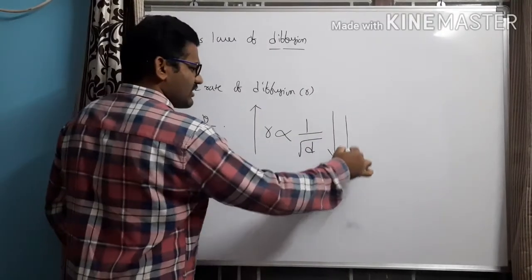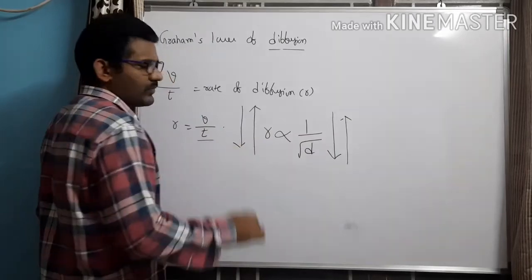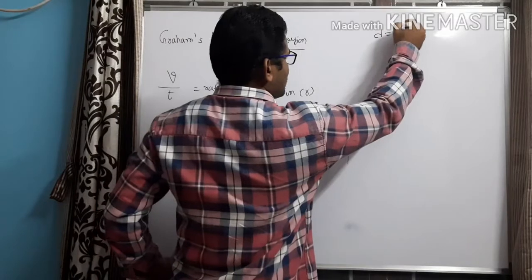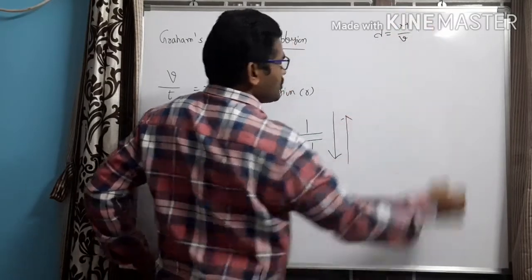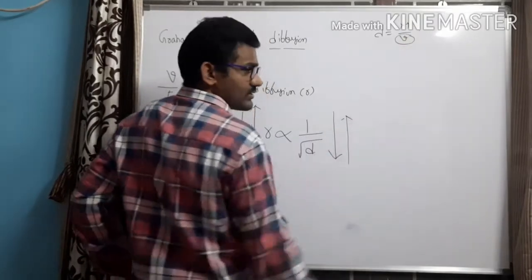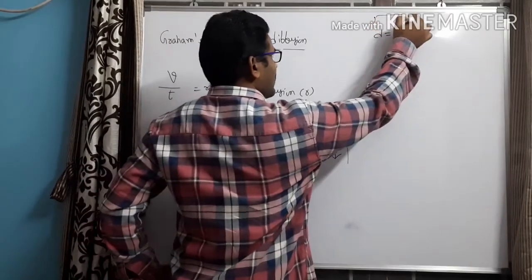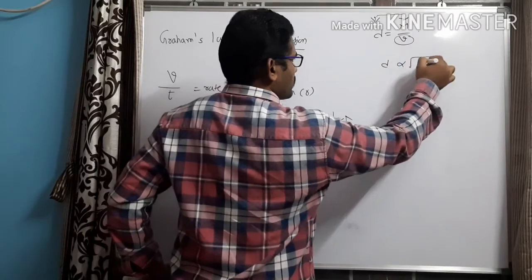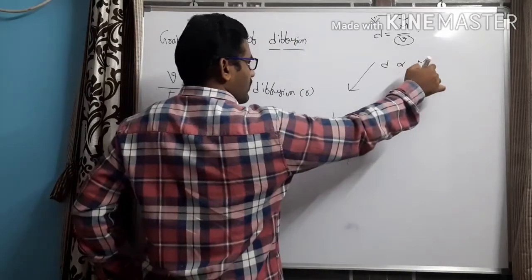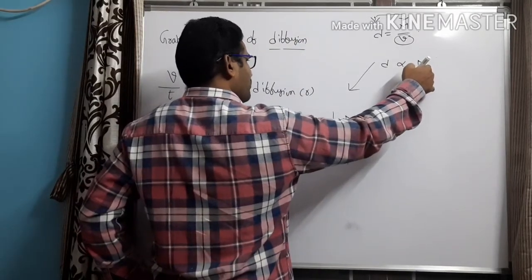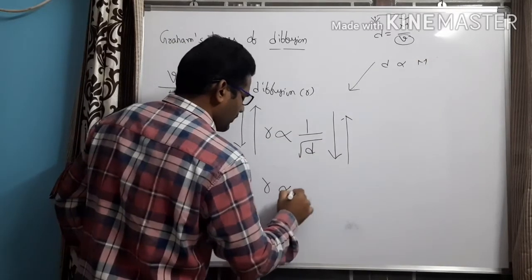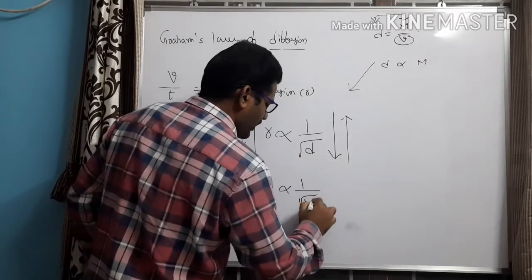When density is more, the rate of diffusion will be less. Density is the ratio of mass to volume. If we consider volume to be constant, then density and mass are directly proportional to each other. So if I substitute molecular mass of the gas instead of density, I can rewrite the equation as R proportional to 1 by root M.